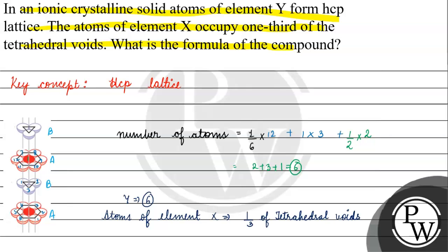The number of atoms is 6, so the number of tetrahedral voids is 12. Therefore, the number of atoms of element X is 4.